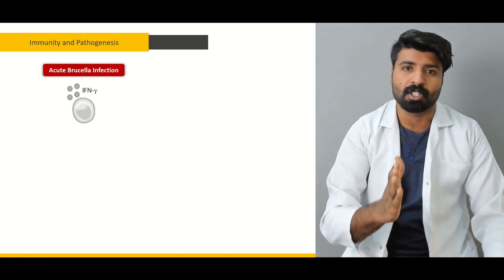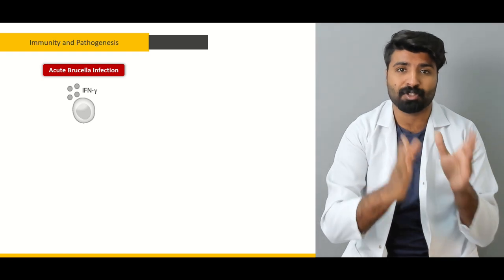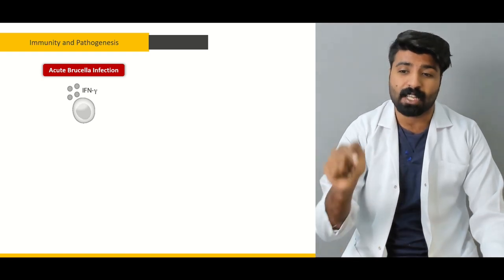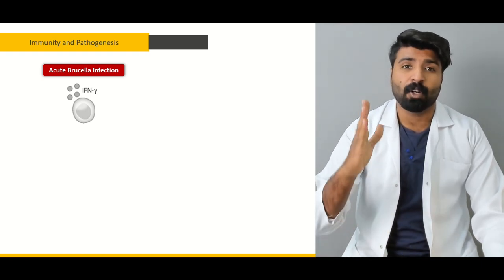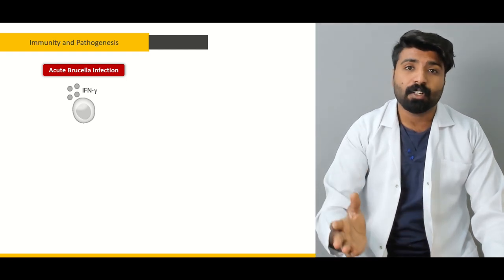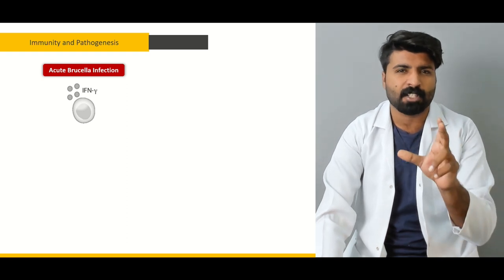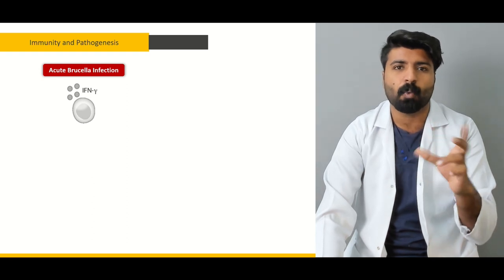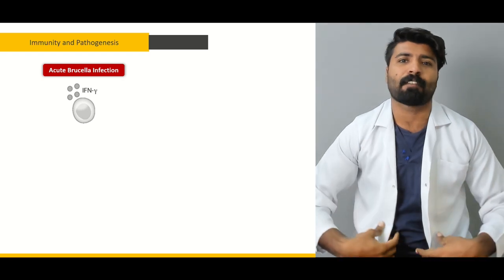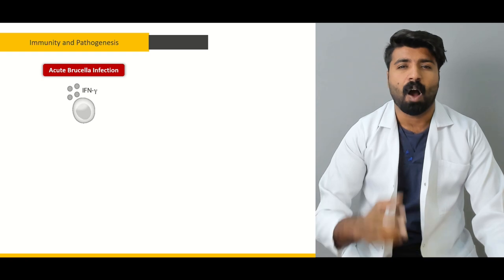The reticuloendothelial system and the genital system are essentially the house of Brucella inside your body — it stores itself there and causes different pathologies. For example, if it affects the placenta, it causes retention of placenta. If it is inside your blood, that is called bacteremia, and through the blood it can reach any organ.